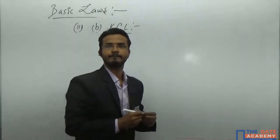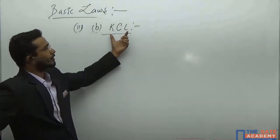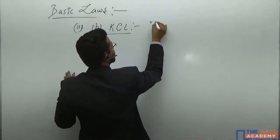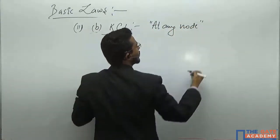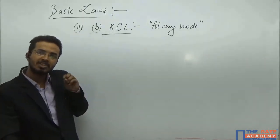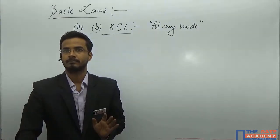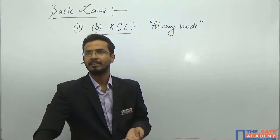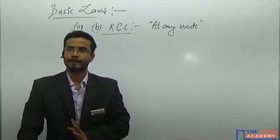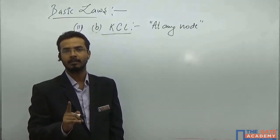Now the second part: KCL. So what is the condition for this? At any node — whatever charge you are providing towards the node, the exact amount of charge must have to leave from the node. Charge is the measure of current, so total incoming current towards the node must have to leave from the node also. Or in a more general form: algebraic sum of all the currents at any particular node must have to be zero.